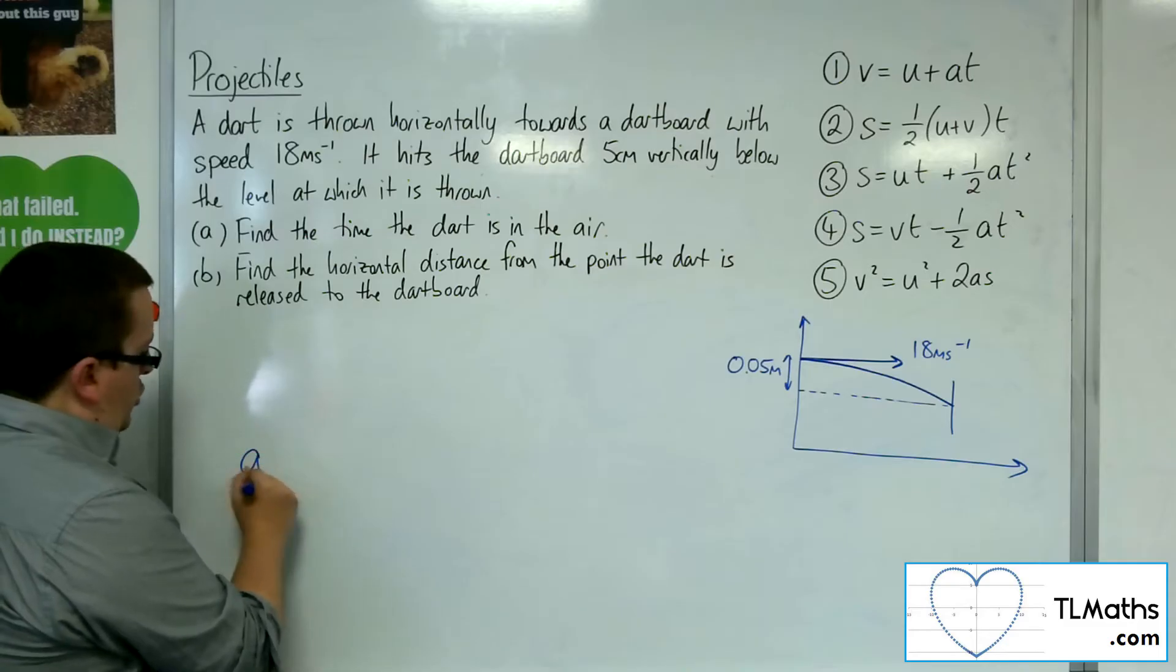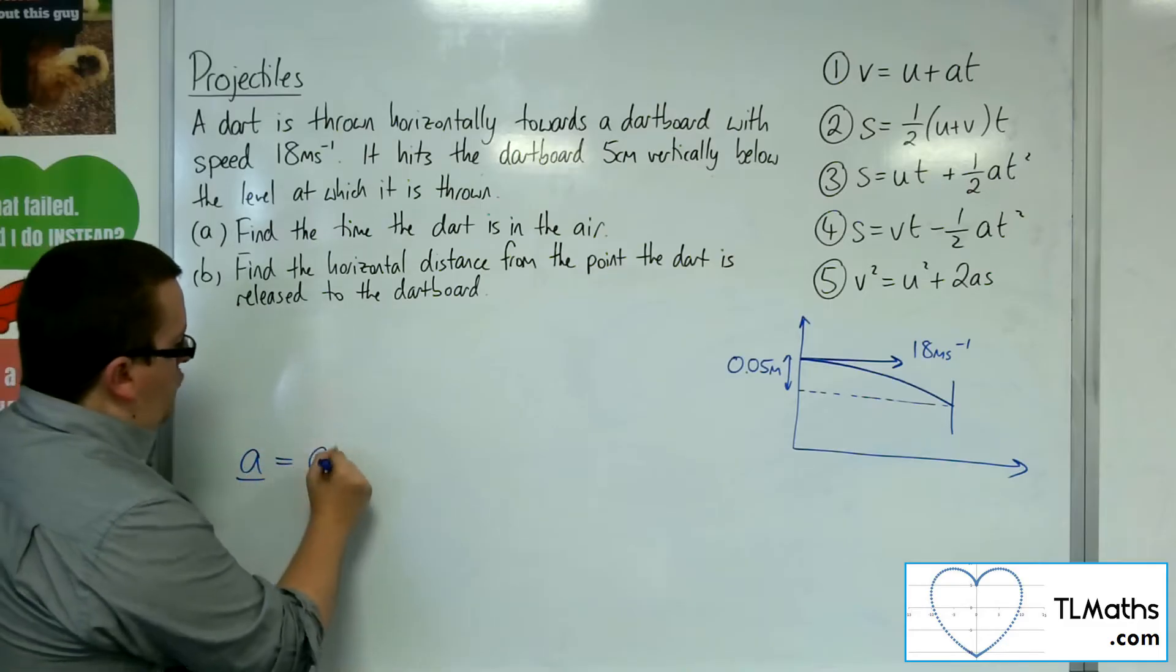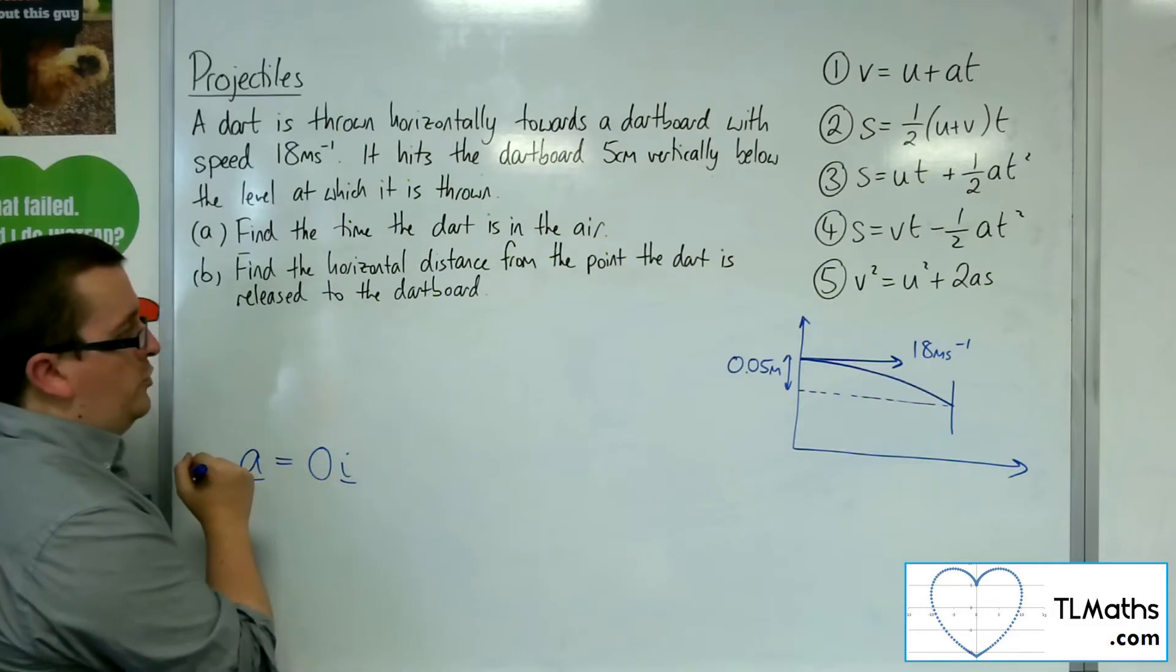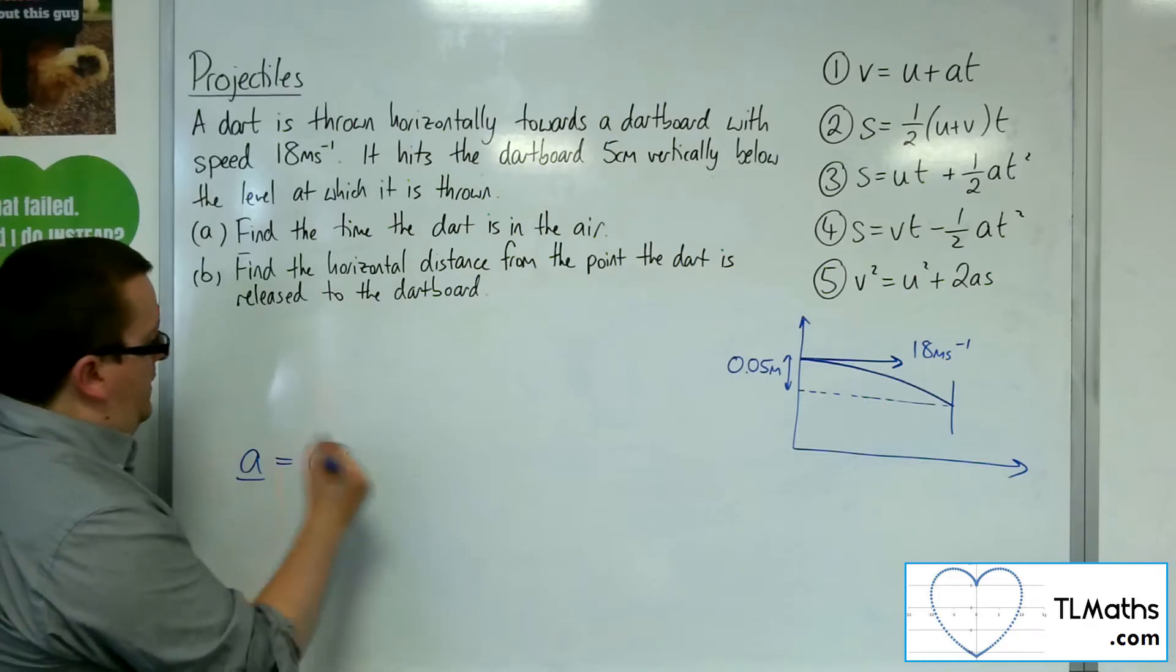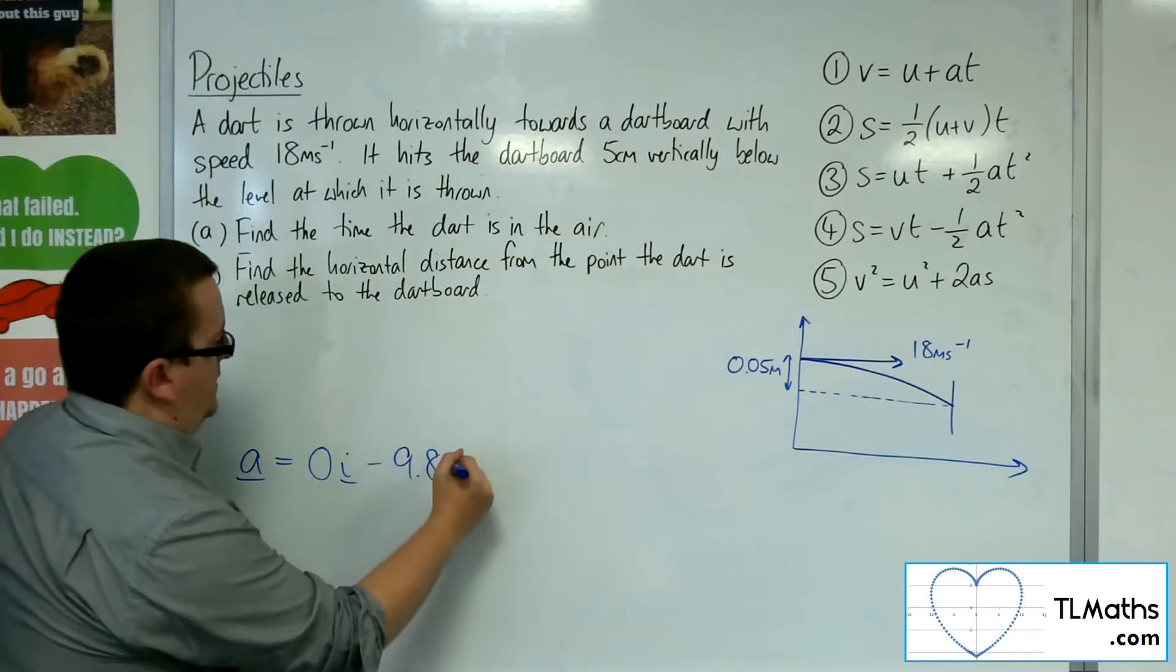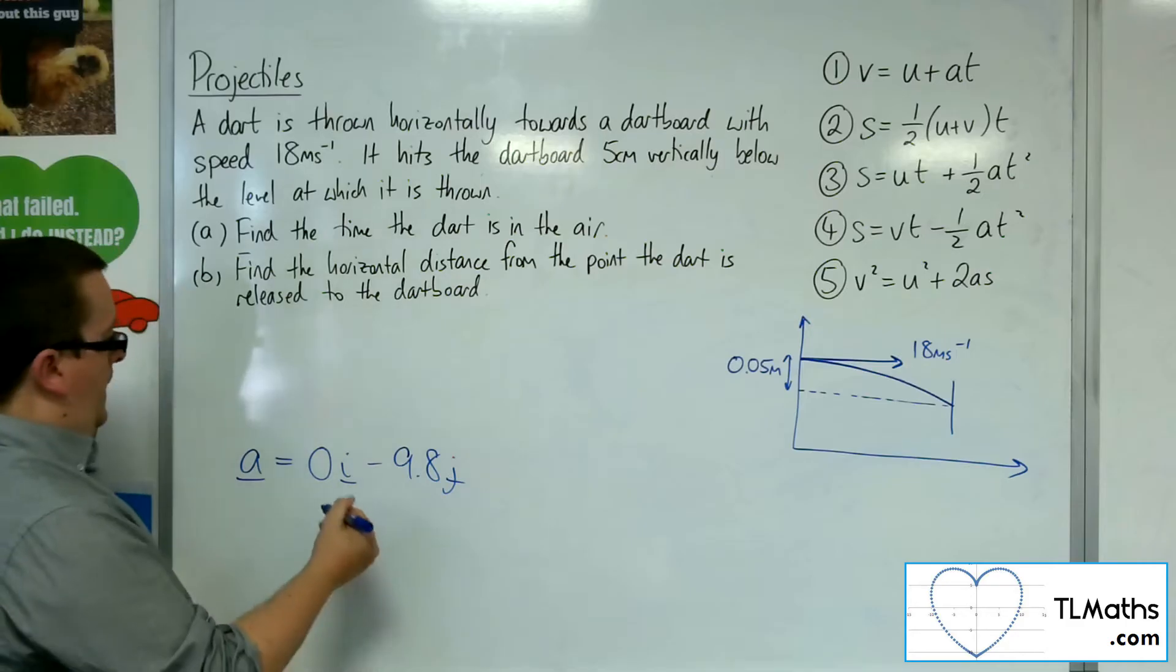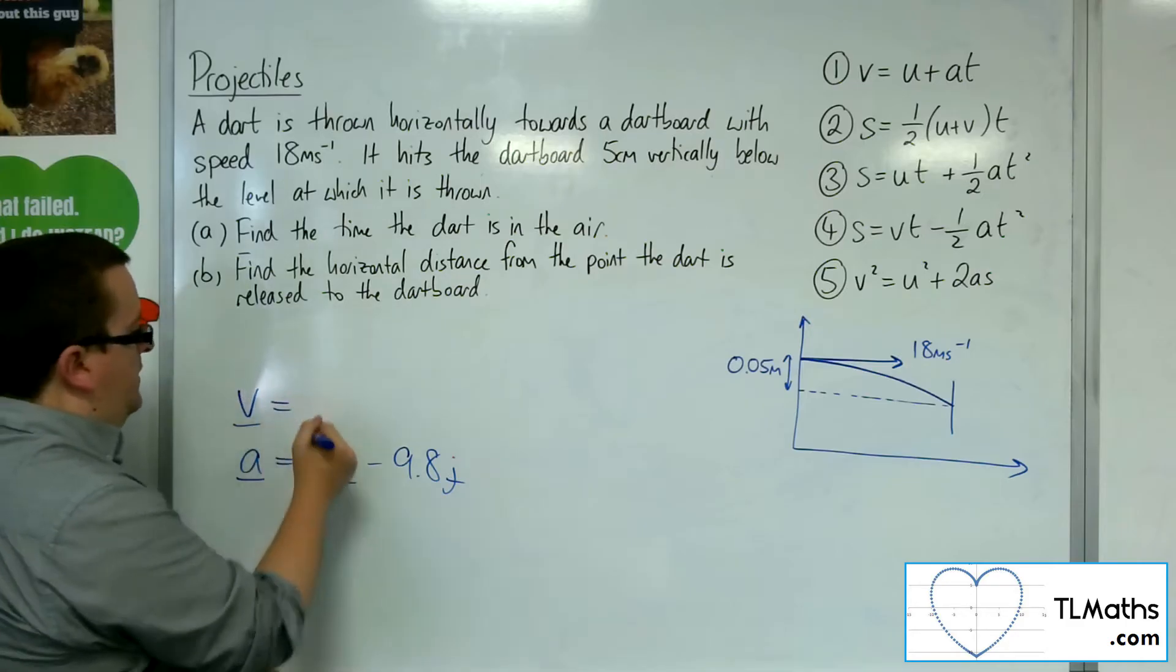So we've got acceleration is 0 in the horizontal direction, and then minus 9.8 in the vertical direction. Integrating to get to the velocity.